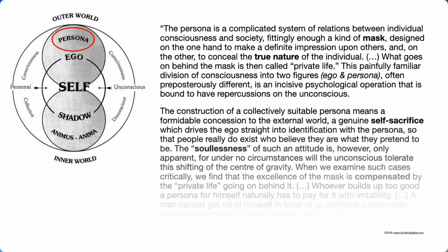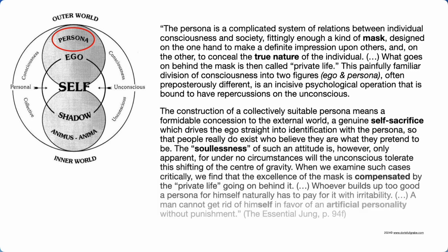The construction of a collectively suitable persona means a formidable concession to the external world, a genuine self-sacrifice which drives the ego straight into identification with the persona, so that people really do exist who believe they are what they pretend to be. When we examine such cases critically, we find that the excellence of the mask is compensated by the private life going on behind it. Whoever builds up too good a persona for himself naturally has to pay for it with irritability.